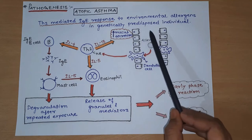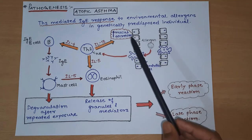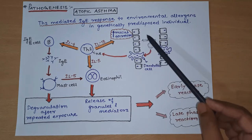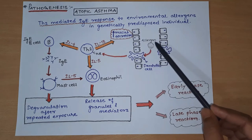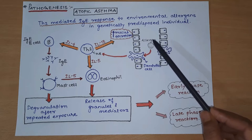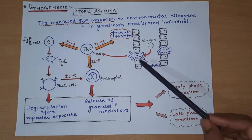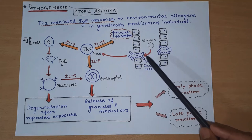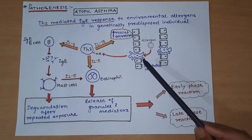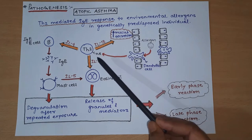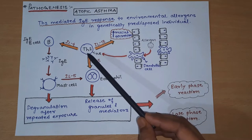Let us discuss pathogenesis in detail. An allergen enters the airway - environmental allergen, which can be dust or pollen. This allergen is first recognized by sentinel cells like dendritic cells, which present it to the T cell receptor of TH2 cells.